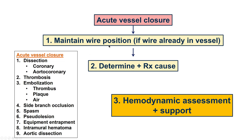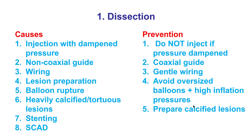What to do when there is acute vessel closure? The first step is to maintain wire position, but unfortunately we did not have wire position in that vessel because we had only partial advancement of the wire that could not be advanced past the mid-right coronary artery. The second is to determine the cause — we know it's dissection in this case. The third is to provide hemodynamic support if needed. Fortunately, our patient had a long-standing high-grade occlusion of the right coronary artery, so there was no significant change on the EKG, no significant chest discomfort, likely because he had collateral flow from the left. The cause here is injection with dampened pressure, something that should be avoided because it can have catastrophic consequences.